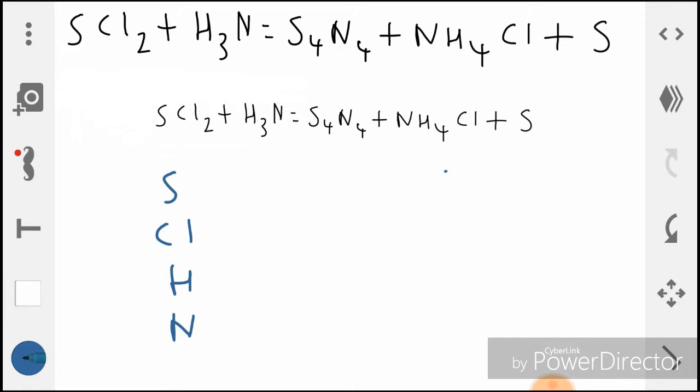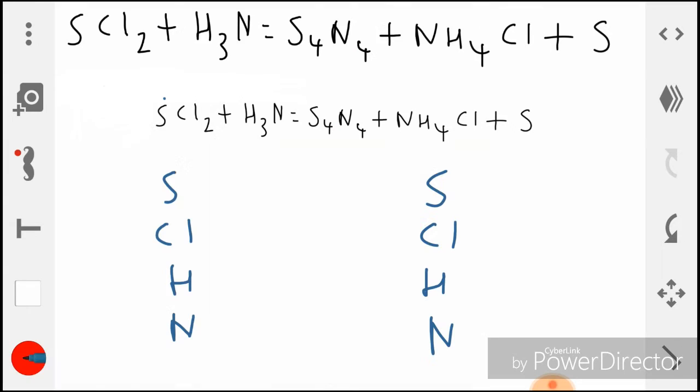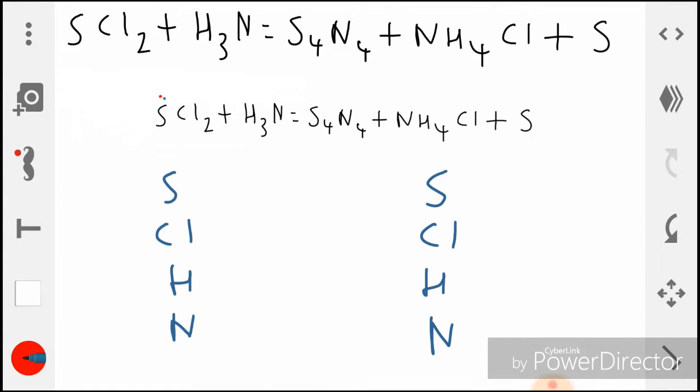So these are the only elements that we have in this equation. Now how many have we got on the left side? We've got one S there as you can see, and two chlorines on the left side.